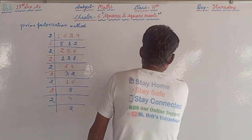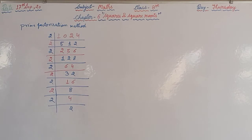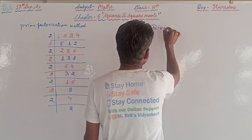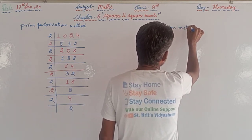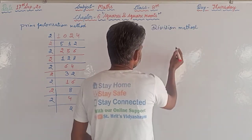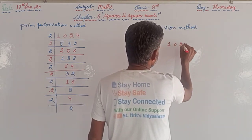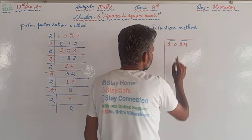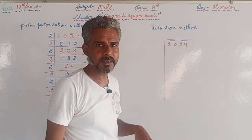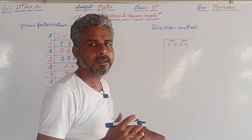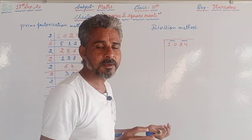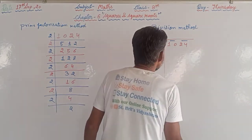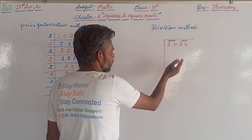In the division method for finding square root, we start by pairing the digits of 1024 from the right-hand side — we must always start pairing from the right, not the left. Here the pairs are complete. If you start from the left, the answer can be wrong. We consider the first pair, which is 10.